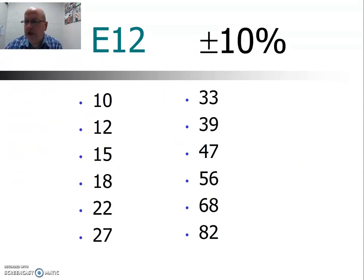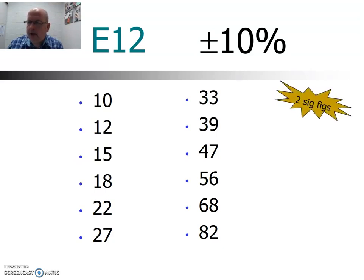Here is the E12 series, which represents plus or minus 10% tolerance. You can see the values are 10, 12, 15, 18 — and it does seem kind of random. One thing to note is that some series use a different number of significant figures when specifying values. The E12 uses two significant figures — we'll come back to that in a couple of minutes.